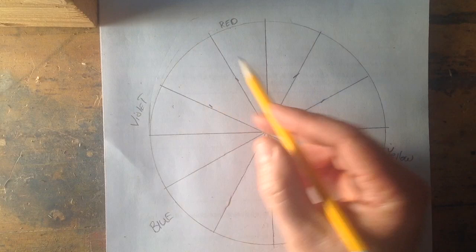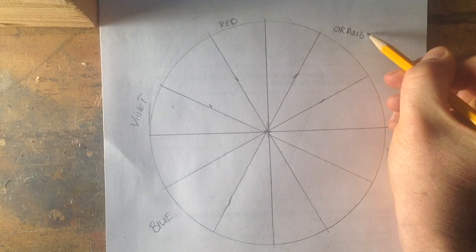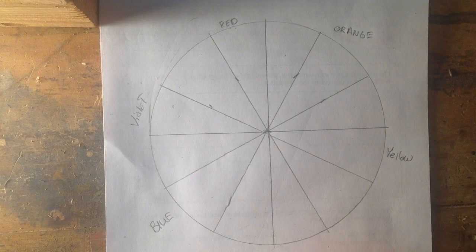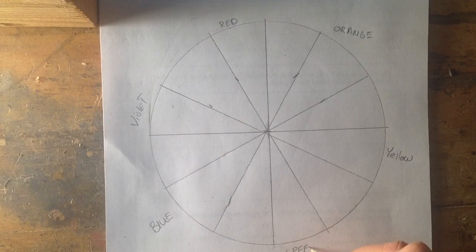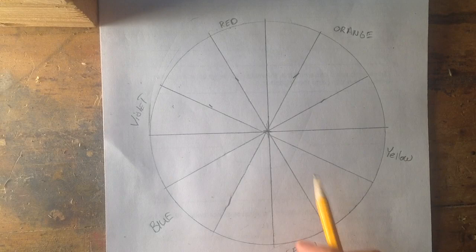I go over here and yellow and red, I know when I mix those together I'm going to get orange. And then in between the blue and the yellow, when I mix those two together I'm going to get green. So I've got my primaries and my secondaries down.